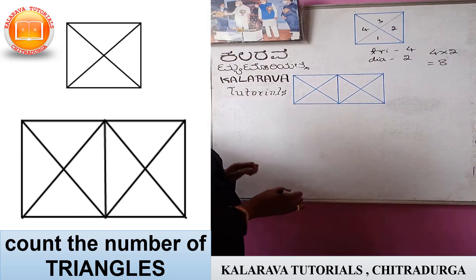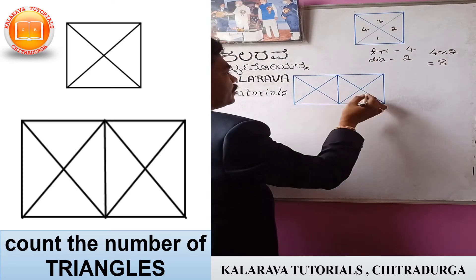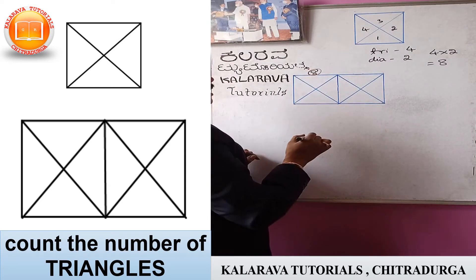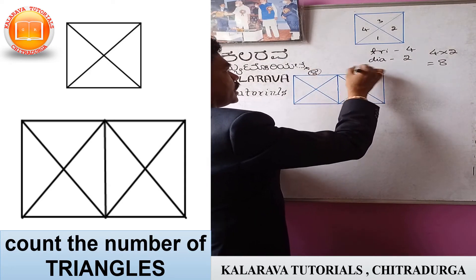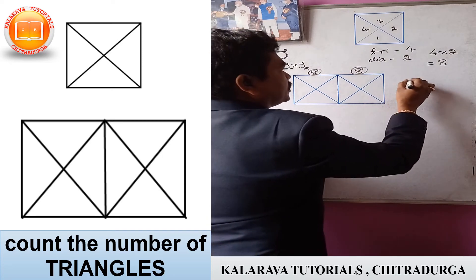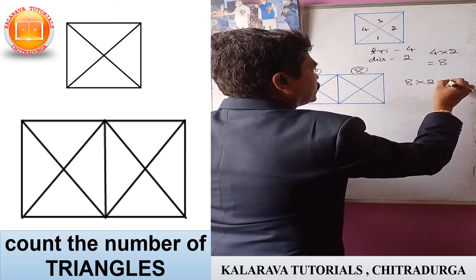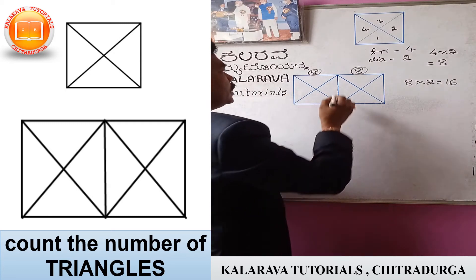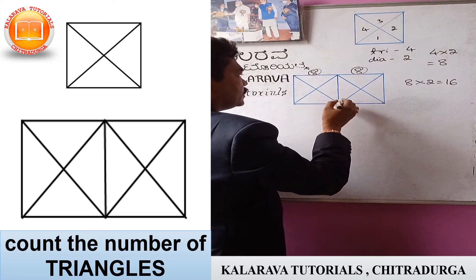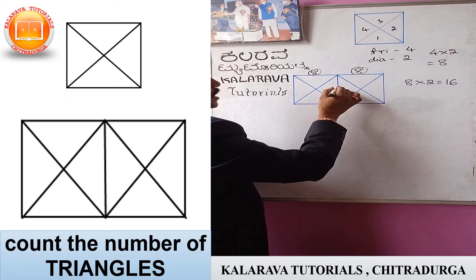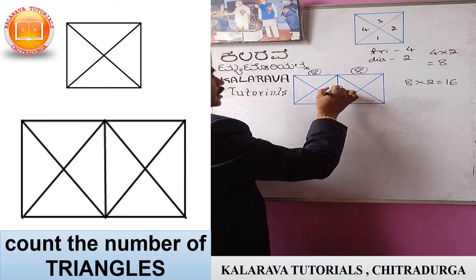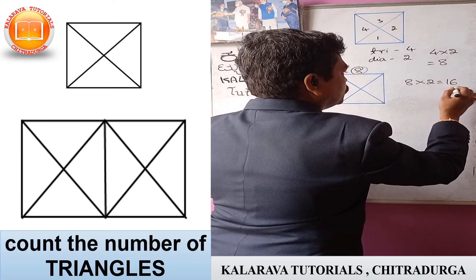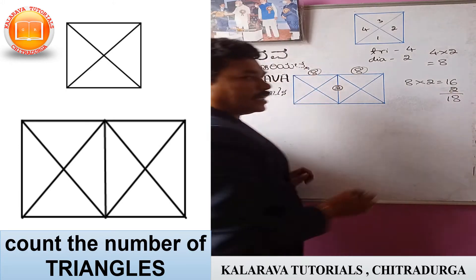We consider this one — the same type of diagonals are there. In the first diagram, there are 8 triangles; in the second diagram, there are 8 triangles. That means 8 into 2 equals 16. But other triangles are there — there is a common side. You have to take the common side and add 2 extra triangles. So that is 16 plus 2, giving you 18 triangles.